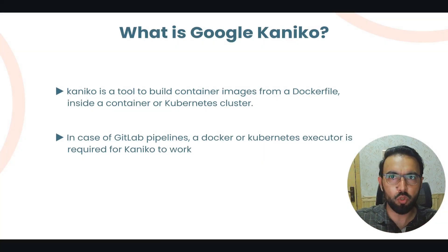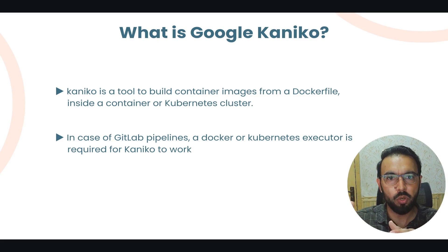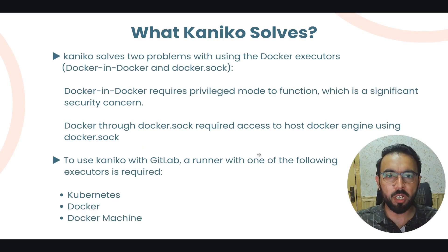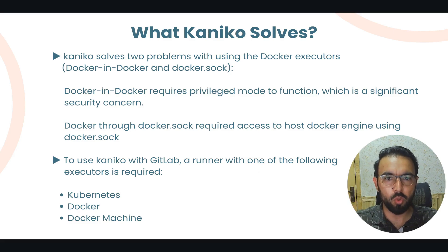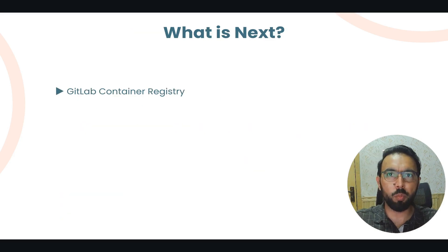To recap: Google Kaniko is a tool to build container images from a Dockerfile inside a container or Kubernetes cluster. For GitLab pipelines, you need a Docker or Kubernetes executor. It solves the security issues of Docker-in-Docker (which requires privileged mode) and Docker socket mounting (which exposes the host engine). You can build from a root or nested Dockerfile, and push to both public and private container registries.